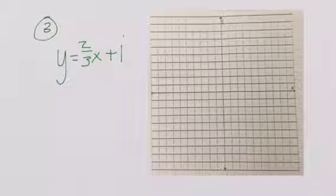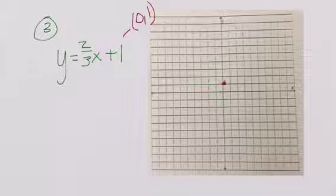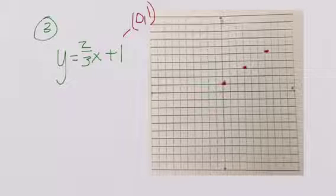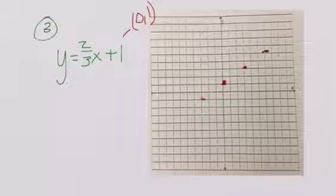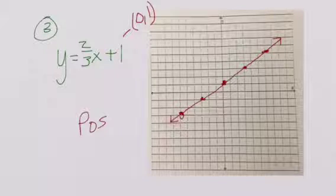We need to find our starting point — our y-intercept — so we write it as an ordered pair: zero, one. Our slope is already in fraction form so we're set and ready to graph. We go to zero, one as our starting point. We go up two to the right three, then up two to the right three again. We go back to our starting point and do just the opposite: down two to the left three, and down two to the left three. We connect our points, add the arrows, and label our slope as positive.